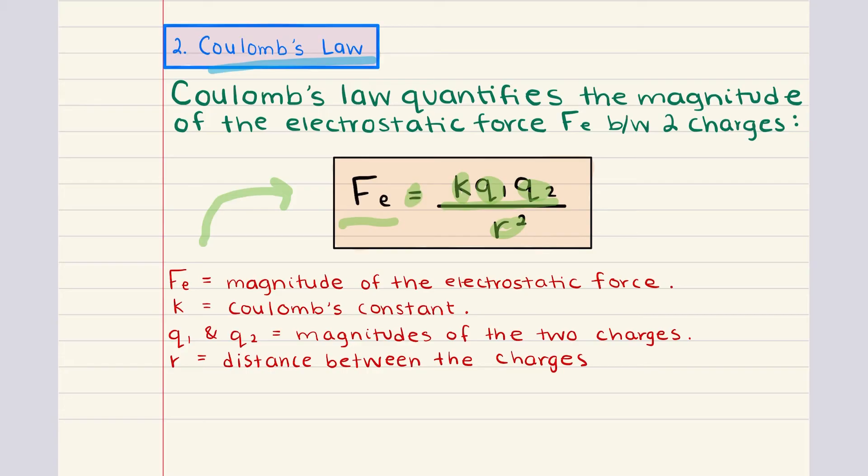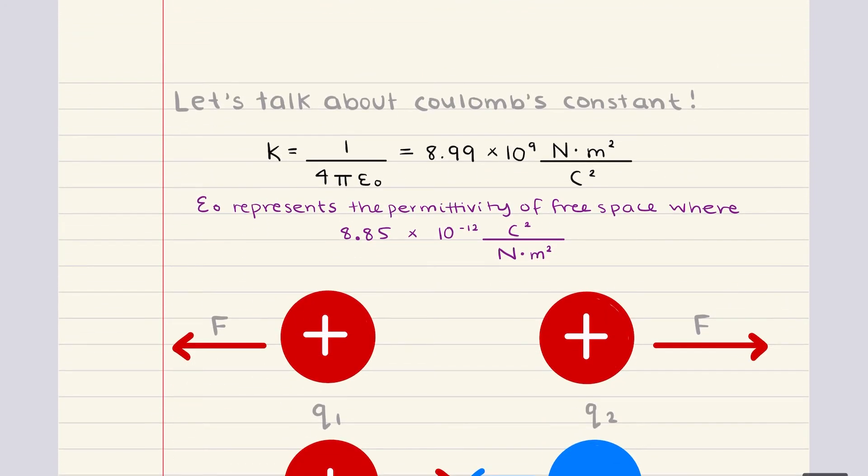This equation tells us that the force between two charges is directly proportional to the product of the magnitudes of the charges, and inversely proportional to the square of the distance between them. With that, let's talk about Coulomb's constant a little more. Coulomb's constant K can be derived from the permittivity of free space, which is denoted as epsilon naught. The relationship is that K is equal to 1 over 4 pi epsilon naught. And this constant helps us describe how charges interact in a vacuum. This is equal to 8.99 times 10 to the 9 newton's meter squared per Coulomb squared.